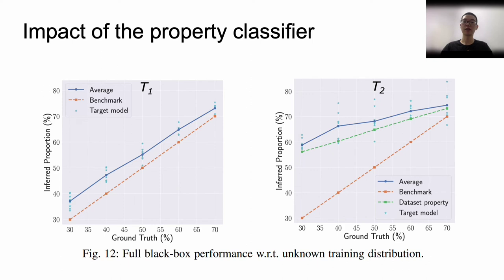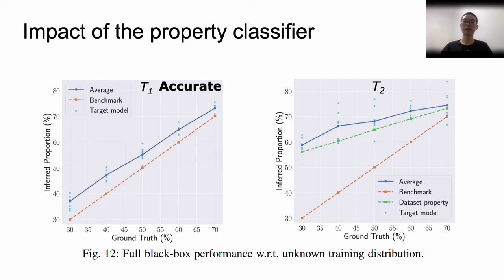In the above results, we have found that the property classifier can influence our attack a lot. So here, we download an IMDB-Wiki gender classifier to achieve our attack. We plot the average inference result line and the benchmark line as before. Our inference attack on the left still has good performance, but the accuracy decreases a lot on the right. We add a line to show the performance of the classifier on the underlying dataset, and we can find that the classifier has bad performance on the target GAN's dataset. Our inference result lies closely to the dataset property inferred by the classifier, revealing that the property classifier plays an important role in our attack.